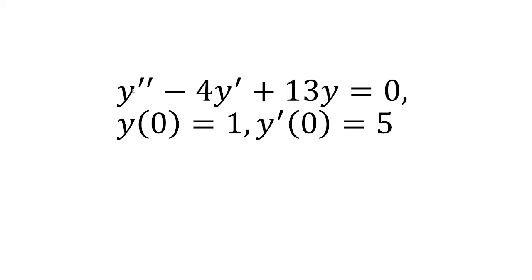We're given this differential equation y'' - 4y' + 13y = 0 with the initial conditions that y(0) = 1 and y'(0) = 5.